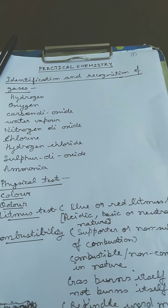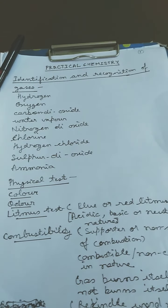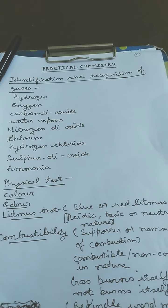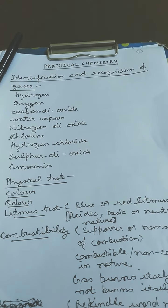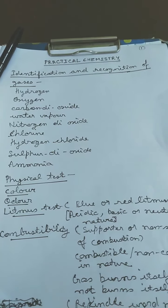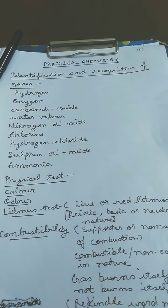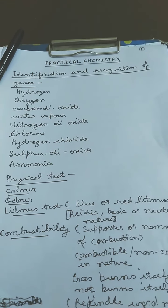Students, we have done two chapters in chemistry in class 9th: language of chemistry and chemical changes and reactions. Now we are going to start with the practical part of chemistry, we can also call it practical chemistry or project work.